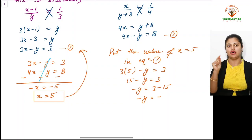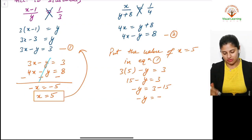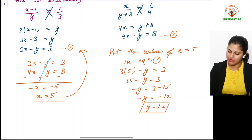Fifteen minus three gives twelve. -y = -12. Negative signs on both sides cancel out, so y equals 12.